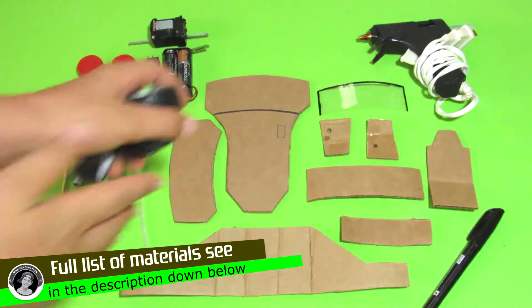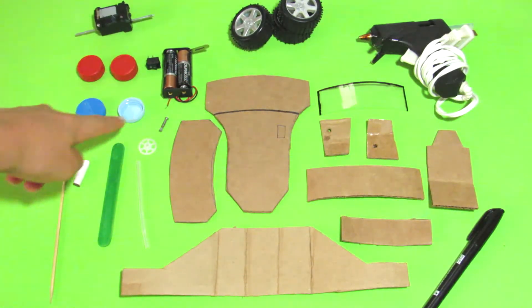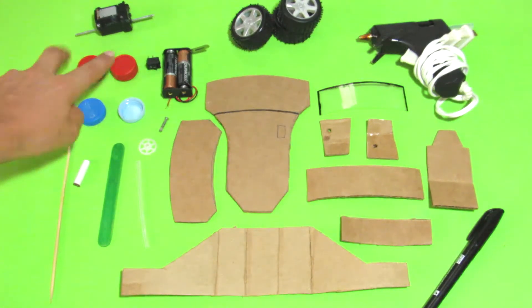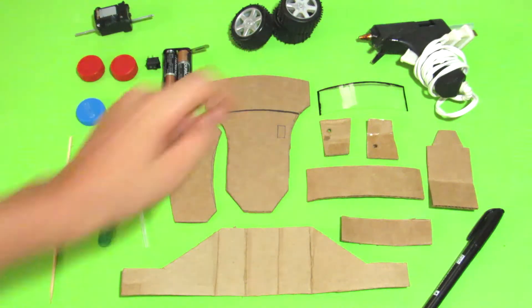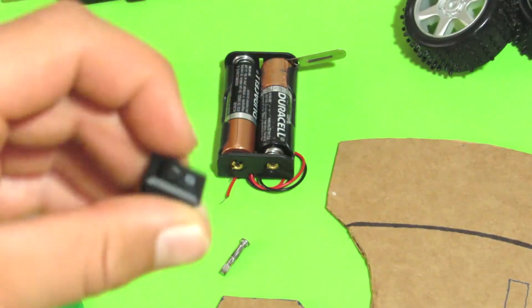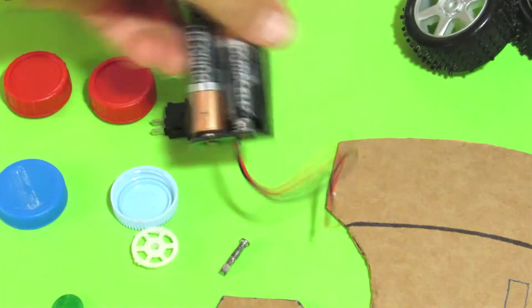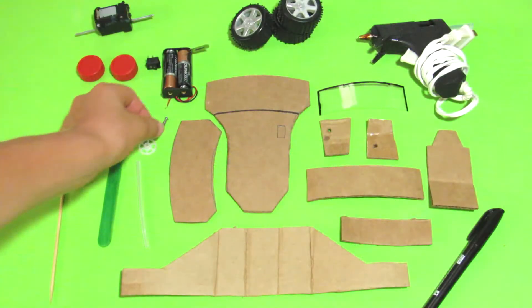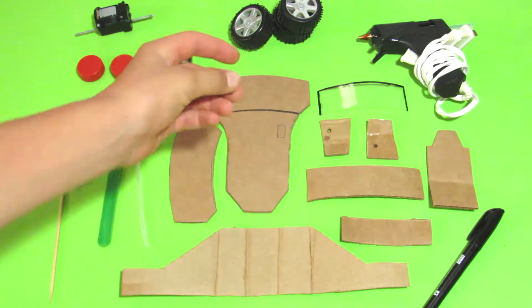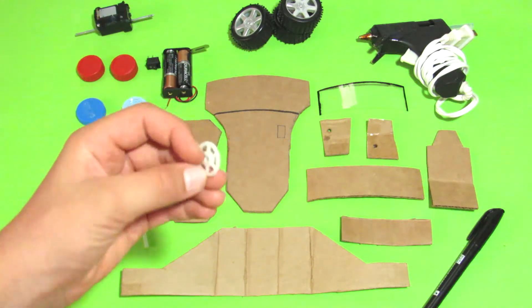You will need three toy car wheels, a DC motor and a gearbox all in one, four bottle caps. Two of them will go in two of these wheels, the inner part, and one will go underneath the cardboard seat for the steering wheel. An on and off switch, a battery holder and a couple of double A batteries. This is a little axle thingy for one of the wheels, the back wheels.